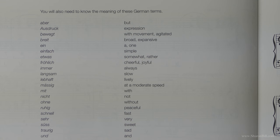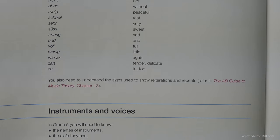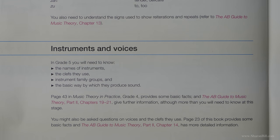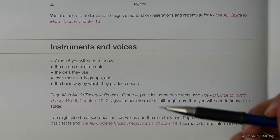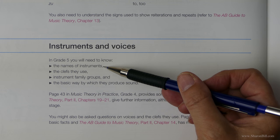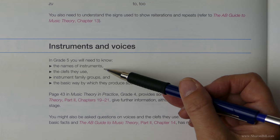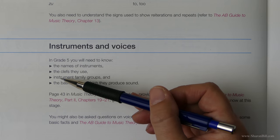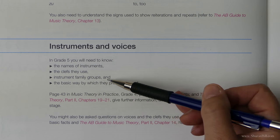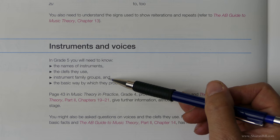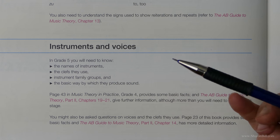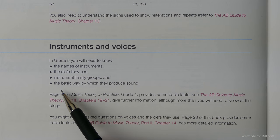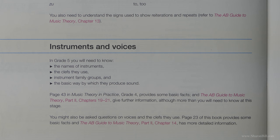Now we have the topic of instruments and voices. In the grade five book, there's just a short paragraph telling us we need to know the names of the instruments — most of the instruments of the orchestra — the clefs those instruments use, the family groups they belong to, such as the strings, the woodwind, the reeds, the brass, the double reeds, and so on. The basic way in which they produce sound is also part of that.